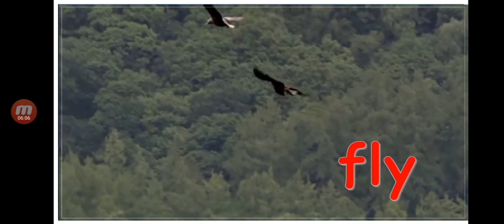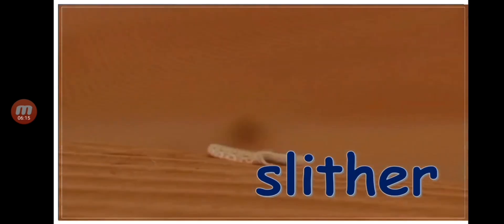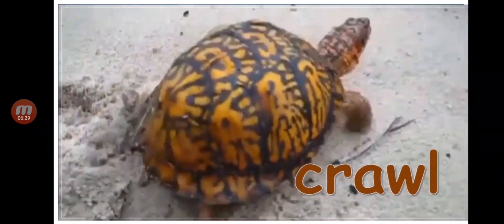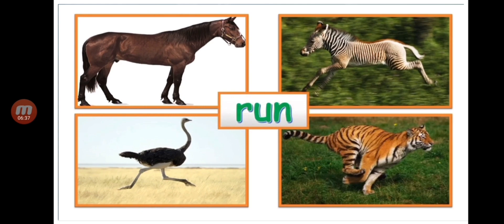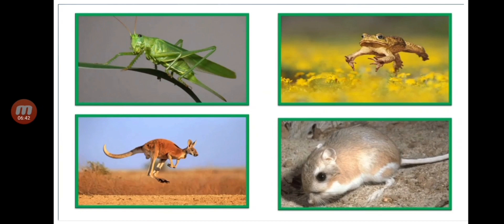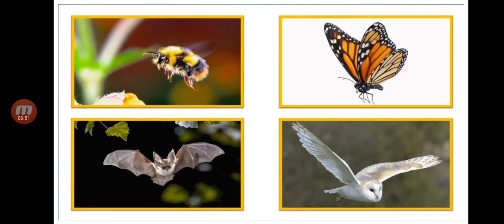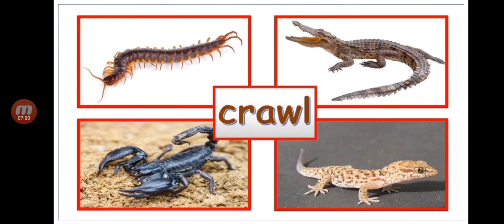Next is the bird — birds move by flying; they fly so high! Next is the snake — snakes slither. And the turtle — turtles crawl. So to summarize: some animals run, some walk, some hop, some swim, some fly, snakes slither, and the scorpion, alligator, and gecko crawl.